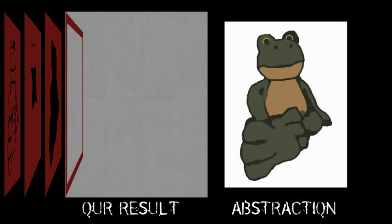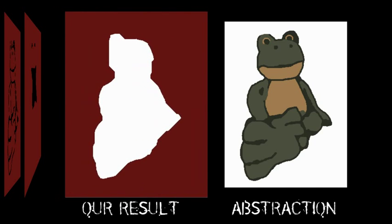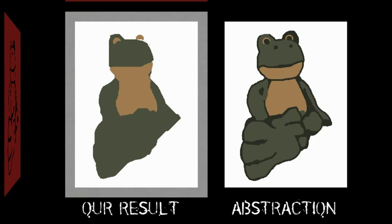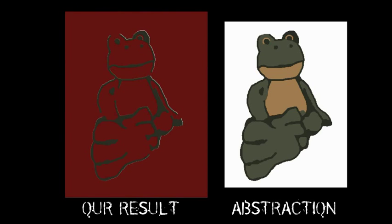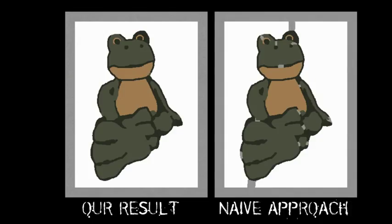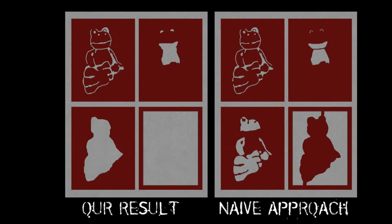In contrast, our system optimises the location of the bridges and selects a suitable layer ordering such that the deviation from the abstracted images is minimised. This leads to much fewer deviations than with the naive approach. Also notice that the stencil is now much easier and cheaper to cut.